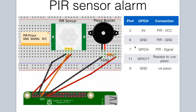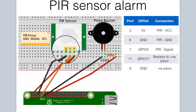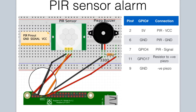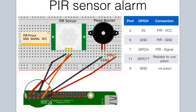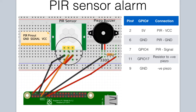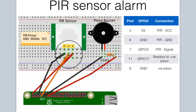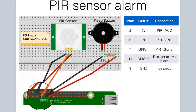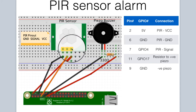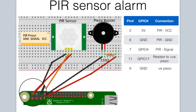Let's take a look at the circuit diagram for our PIR sensor alarm project. We're going to start first with the PIR sensor. There are three connections that come from the PIR sensor and connect to the Raspberry Pi. The ground pin is connected to pin 6, the signal pin (middle pin) is connected to pin 7, and the VCC power pin is connected to one of the 5V pins — pin 2 in this case.